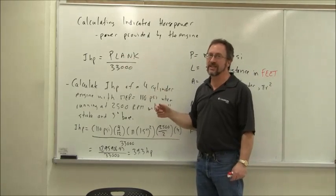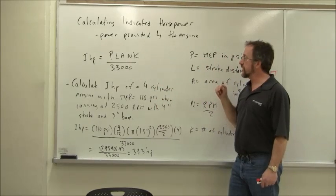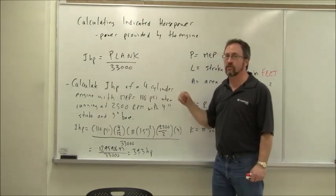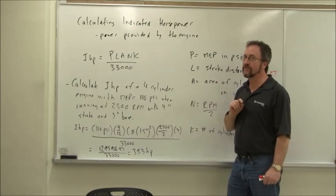The P is the mean effective pressure measured in psi. L is the stroke distance, that's measured in feet. Notice that it's in feet.